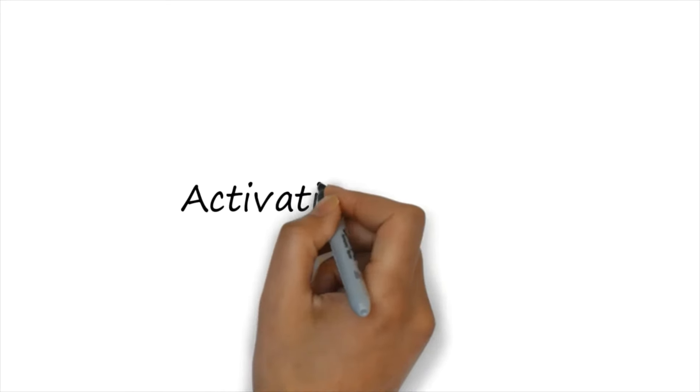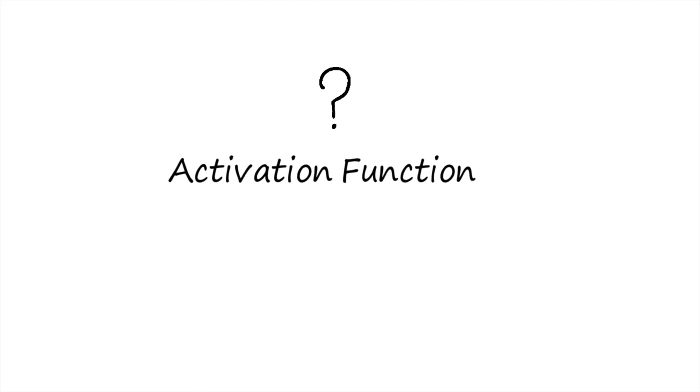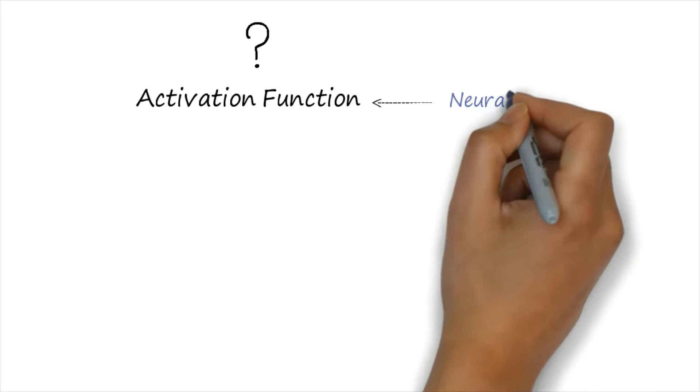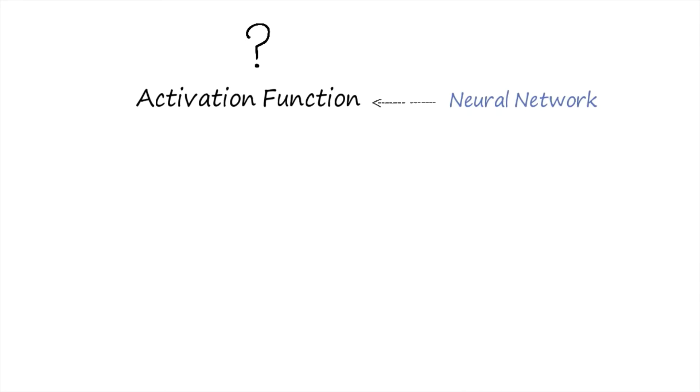Today we are going to discuss the most important topic which is known as activation function. I will demonstrate all possible kinds of activation functions that are used for ANN or any kind of deep neural network design. Activation functions are a critical part of the design of a neural network, and we have already discussed this concept in the previous class.